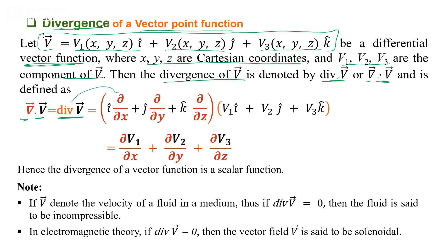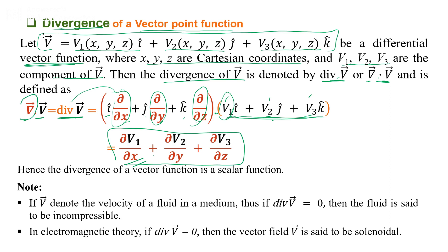Divergence is given by (i·∂/∂x + j·∂/∂y + k·∂/∂z) dotted with vector v having components v1, v2, v3. Taking the dot product: i·i = 1 gives ∂v1/∂x, plus ∂v2/∂y since j·j = 1, plus ∂v3/∂z since k·k = 1. Note that when we operate the del operator on a vector quantity, we get a scalar quantity — the divergence of a vector function is a scalar function. By contrast, the gradient of a scalar function is a vector function.